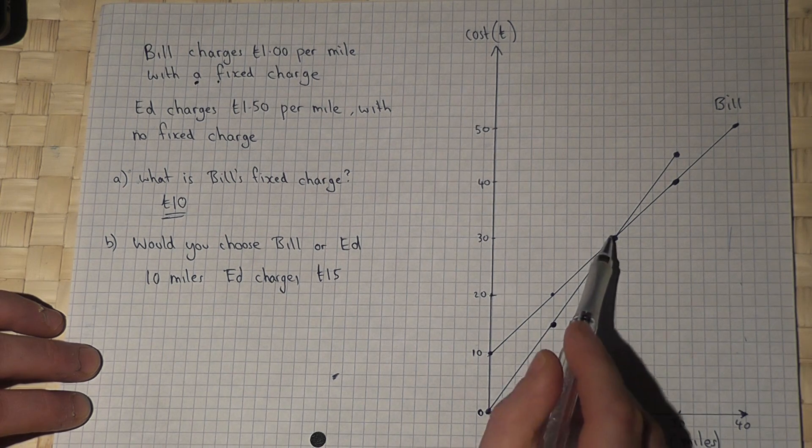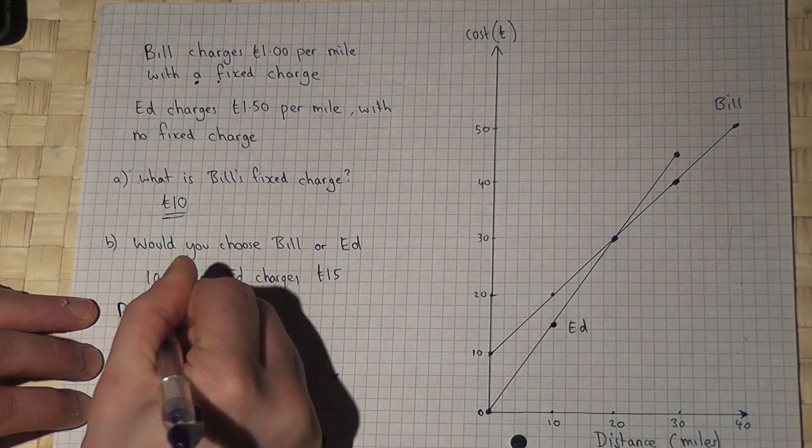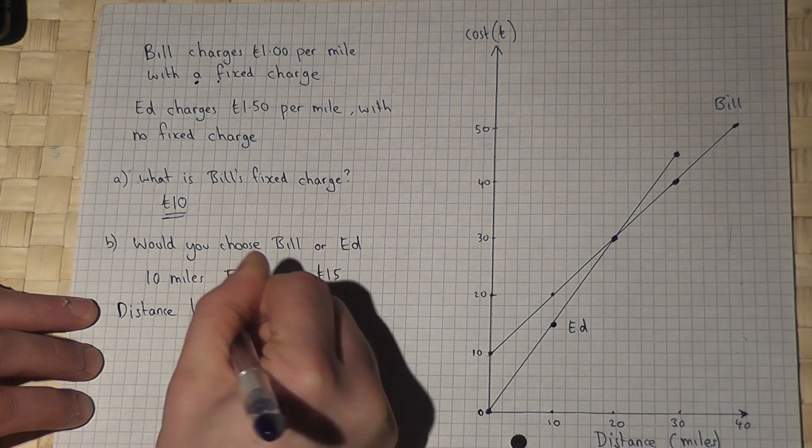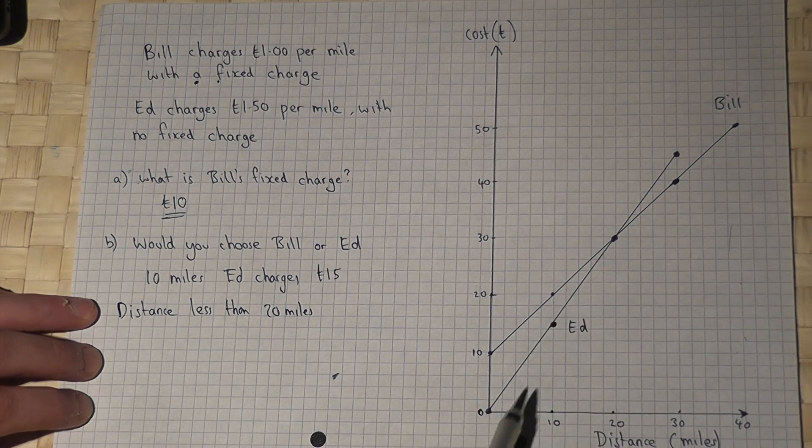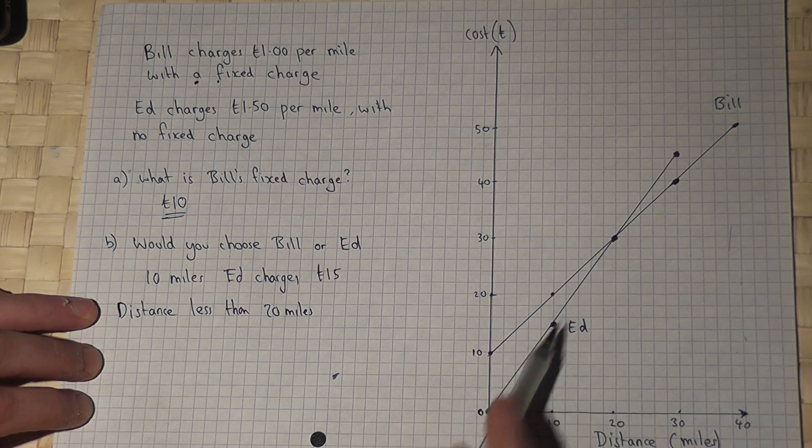They overlap at 20, so if the distance is less than 20 miles, you would choose Ed because Ed's cost graph is below Bill's.